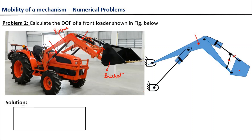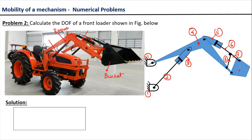Now let us calculate the degree of freedom of this excavator. We will start counting the number of links first. The fixed link will be named link 1. The piston rod is link 2, the hydraulic cylinder is link 3, the boom is link 4, then links 5, 6, 7, and 8 follow. Finally, the bucket is named link 9. So the total number of links in this excavator mechanism is equal to 9.